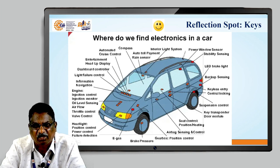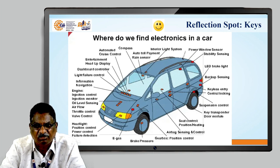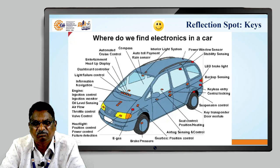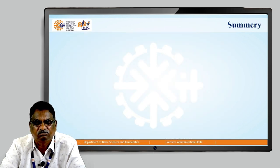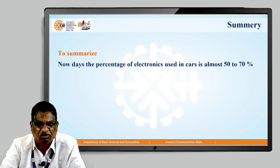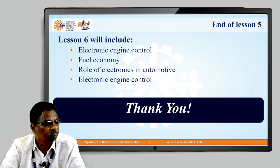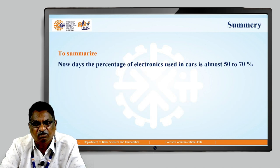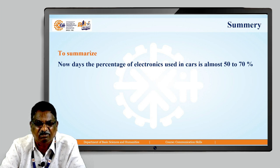Automotive cruise control, automatic cruise control, and entertainment are examples where electronics is used. The summary of the lecture: nowadays, the percentage of electronics used in a car is almost 50 to 70 percent.